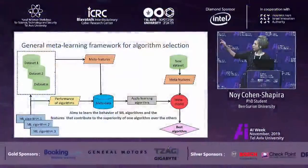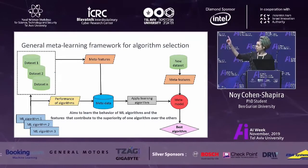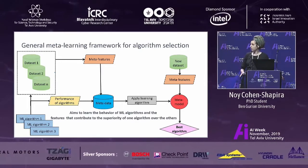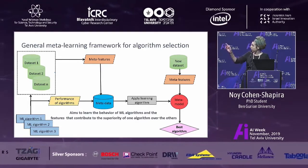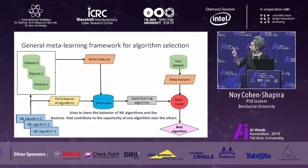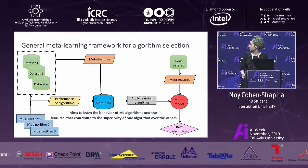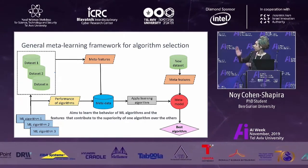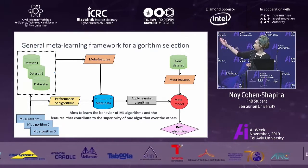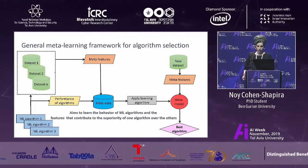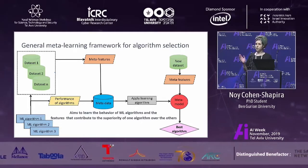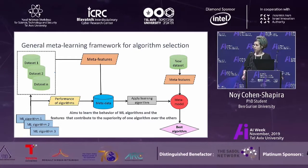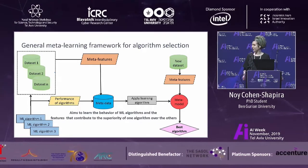The meta-learning framework works as follows: we start with a collection of datasets and machine learning algorithms. For each dataset, we extract meta-features describing their characteristics. Then each algorithm is tested on each dataset and its performance is estimated. The meta-features and performance estimates are stored as metadata. A learning algorithm, a meta-learner, induces a meta-model that relates the meta-features with the best algorithm for each dataset. Given a new dataset, we extract its meta-features and use the meta-model to recommend top-performing algorithms. The success of this framework mainly depends on the ability to extract informative meta-features, which is one of our contributions in this paper.